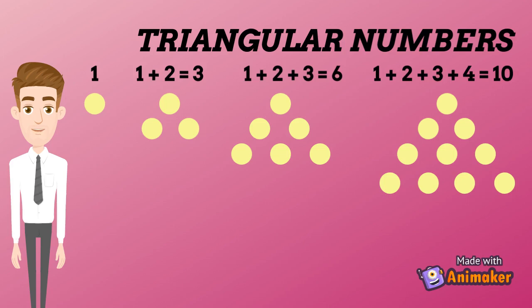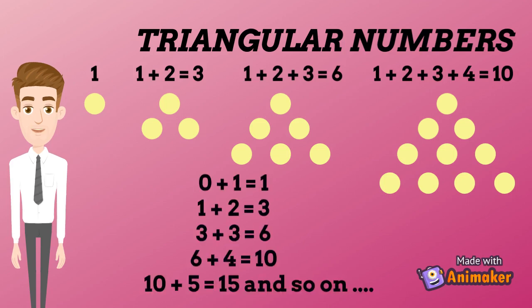In this way we can keep adding dots to get the next triangular numbers. Starting from 0, if we add numbers 1, 2, 3 and so on to the triangular numbers, we get the next triangular number.